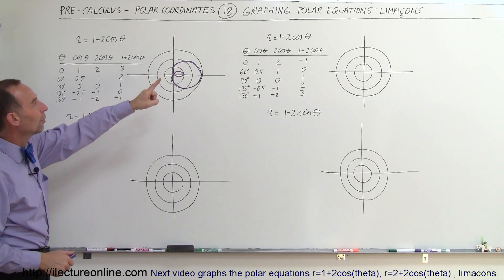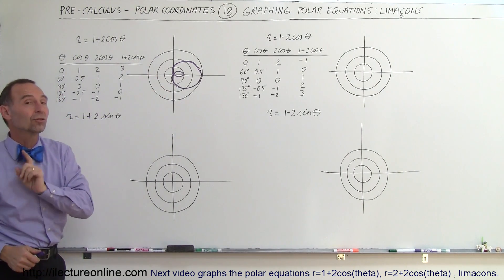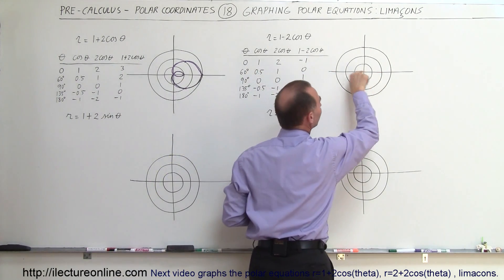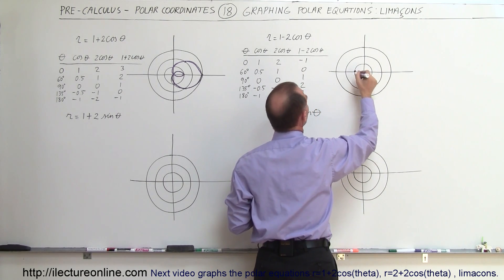But what does it look like when r equals 1 minus 2 times the cosine of theta? Well, notice when the angle is 0, r is negative 1. So we're pointing in this direction, r equals negative 1, which puts us right there.